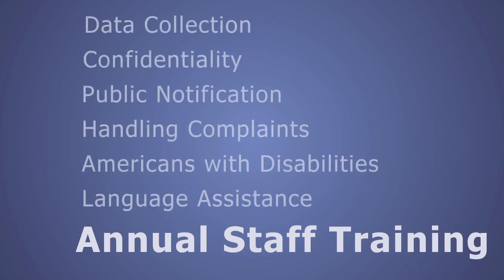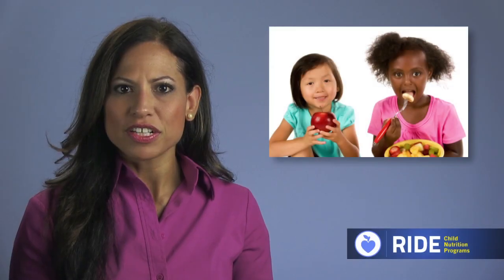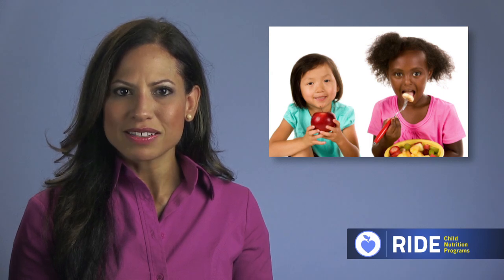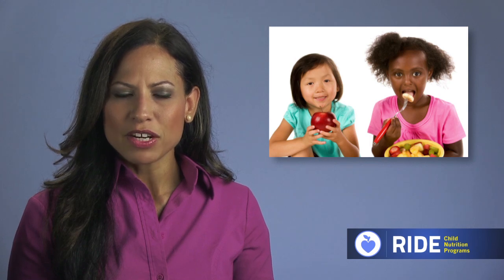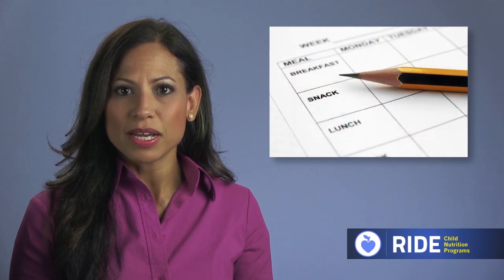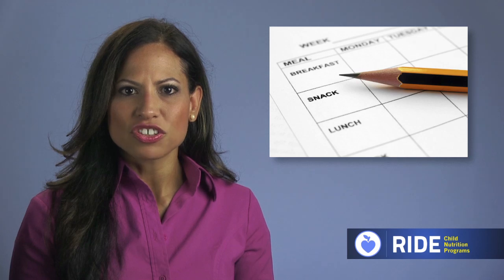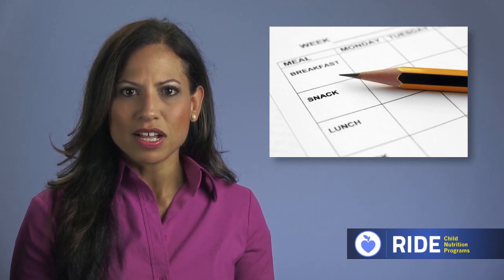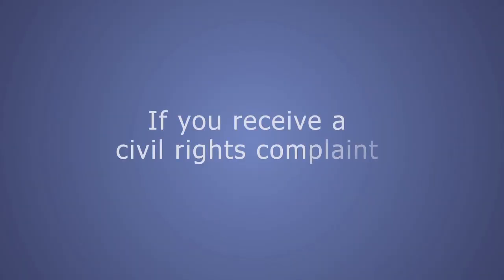All staff that interact with applicants or participants must be provided with civil rights training appropriate to their job responsibilities on an annual basis. For example, people working in a classroom should be made aware that they cannot purposely separate children by ethnicity, race, age, or gender at mealtime, and that reasonable accommodation of persons with disabilities should be made. Similarly, a person responsible for processing meal eligibility forms should be trained on the importance of keeping that information confidential. In addition, all staff should be aware of what to do if they receive a civil rights complaint. Be sure to instruct staff on your complaint procedures.